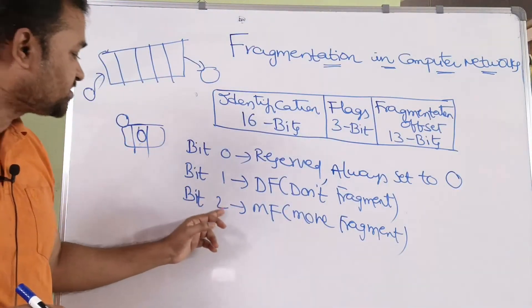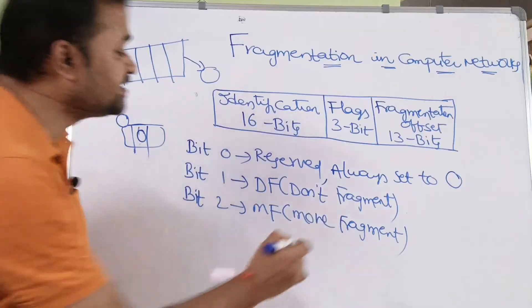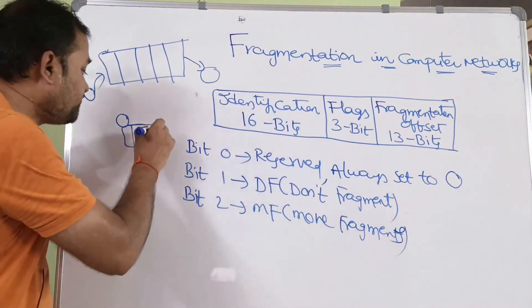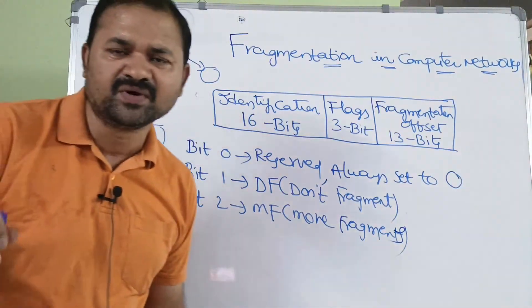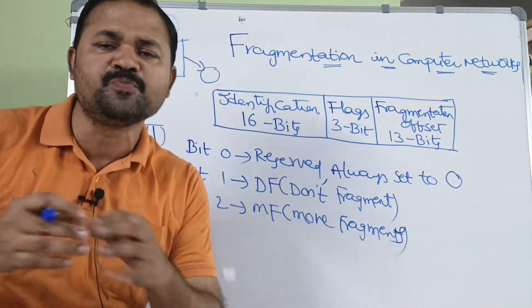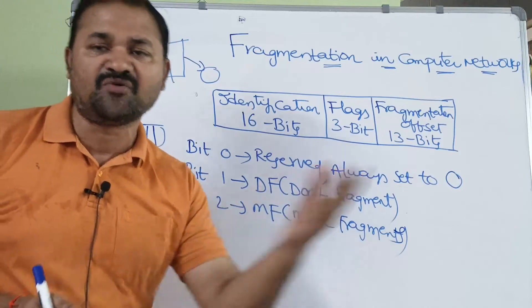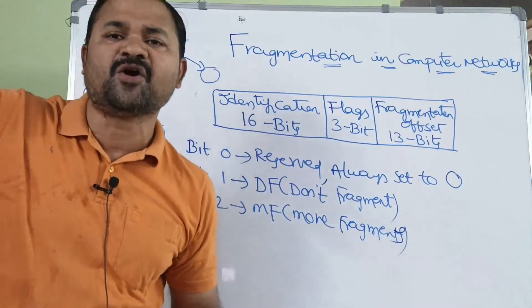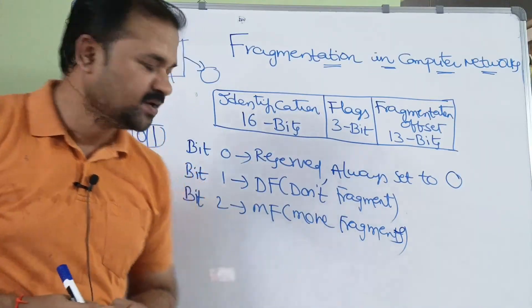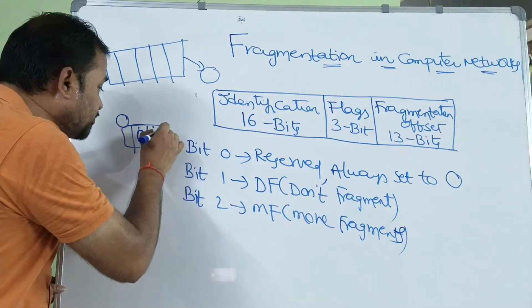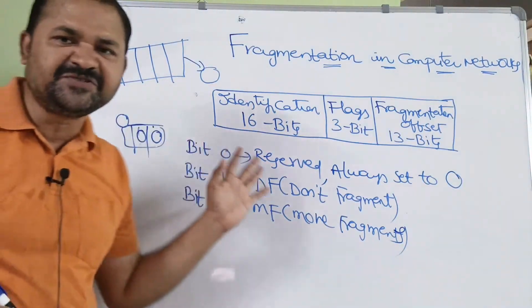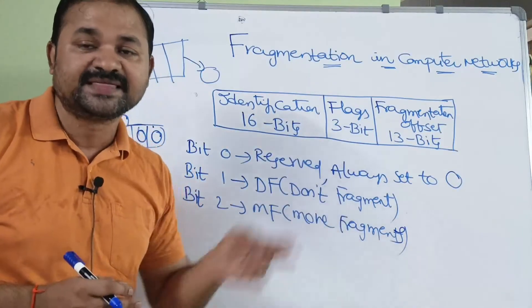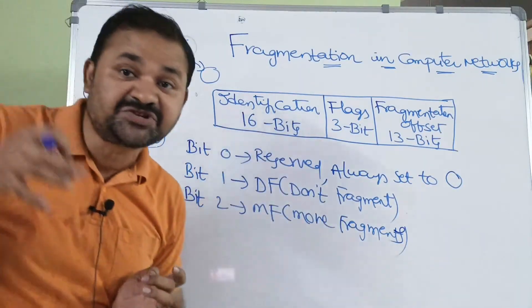And the last field is MF, which specifies more fragments. If MF is set to 1, then we have some more fragments - many fragments after that fragment to be followed. Whereas if MF is set to 0, then it specifies we don't have any fragments after that fragment. That means it is the last fragment.